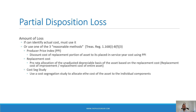Otherwise the IRS gives us three reasonable methods. The first is the Producer Price Index, or PPI. This allows you to discount the cost of the replacement portion of the asset to its placed-in-service year cost using the PPI. I don't recommend this method for anyone that's not intimately familiar with construction costs, because there's a lot of room for error.